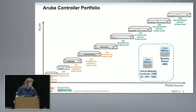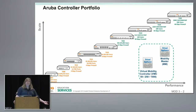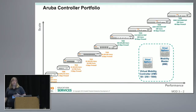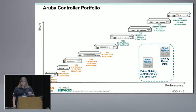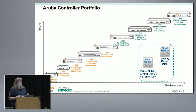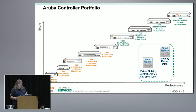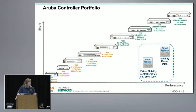We now have a virtualized controller in the 8.x product line. I'm going to focus first on the architecture and then jump into some of the features of 8.x. You'll see there are two ways the virtual controller could be configured: there is something called an MM, which is a Mobility Master, and then there's something called an MC, or Mobility Controller.